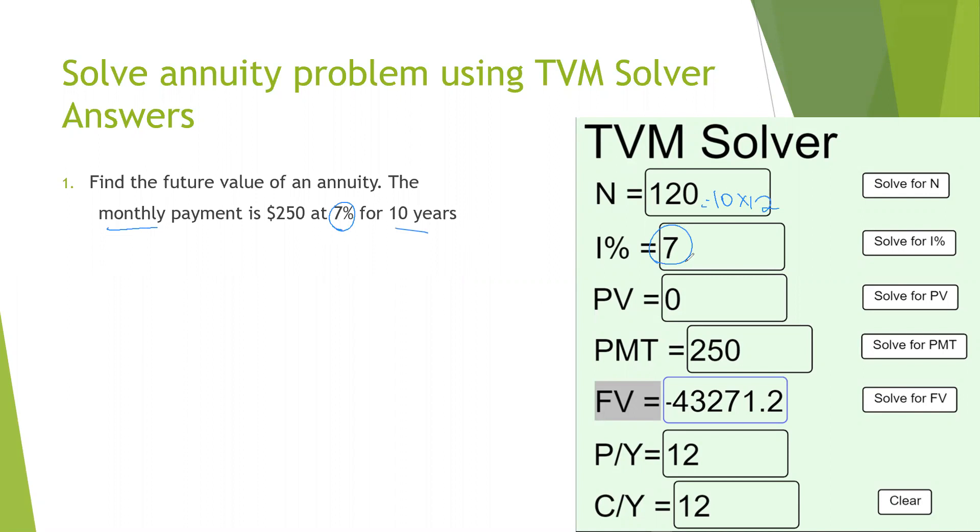So 10 years and monthly means that we're going to have 10 times 12 equals 120. That 7% goes straight here. The present value, it doesn't tell us anything, so we're going to assume that you have nothing today. But every month from here on out, you're going to have an extra $250. The payments per year and compounding per year, because of this monthly, those both are 12. Now you're going to click on the future value button. Our future value is $43,271. That is how much you'll have in the future if you put away $250 a month at 7% interest.